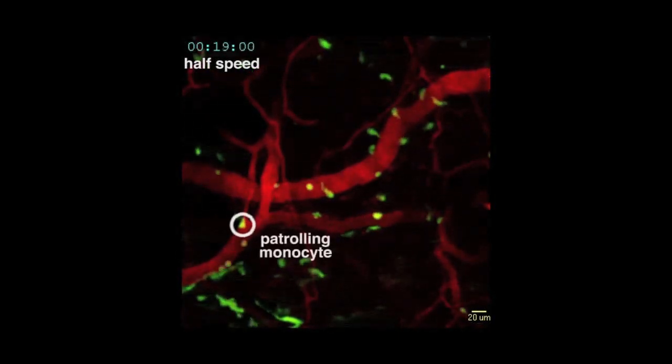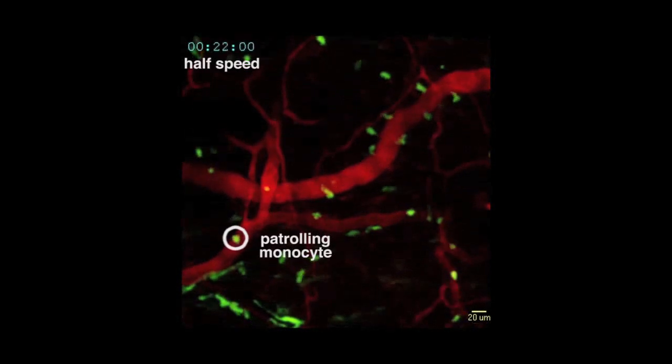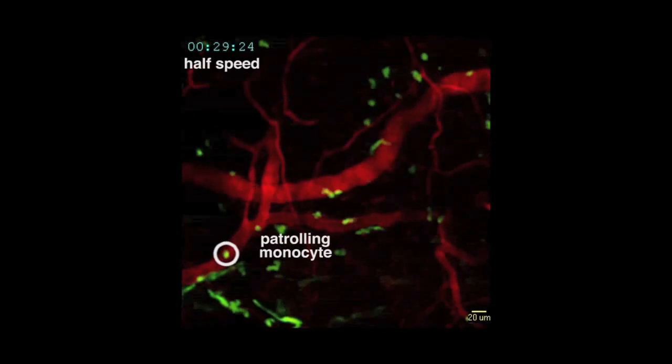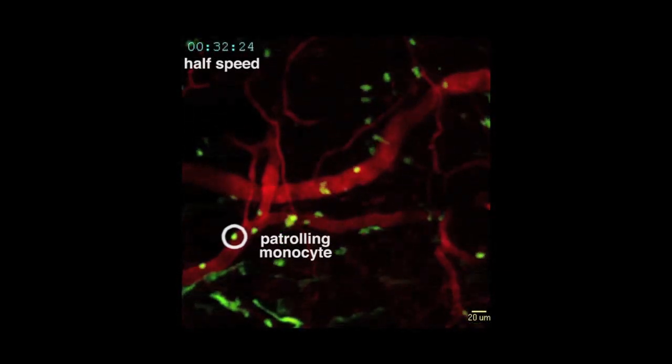In contrast, the patrolling monocytes adhere more tightly to the inner surface of the vessel and slowly traverse the endothelium in either direction and are even able to change direction.